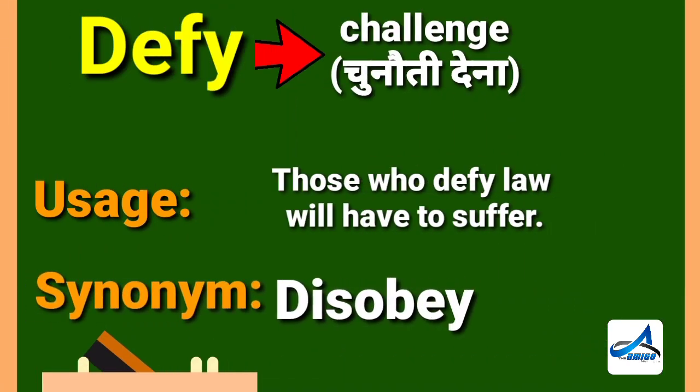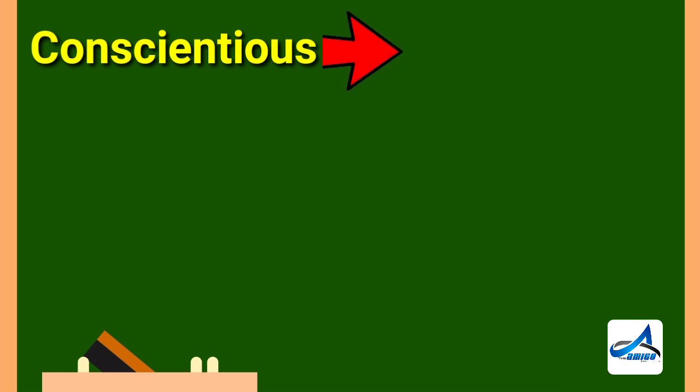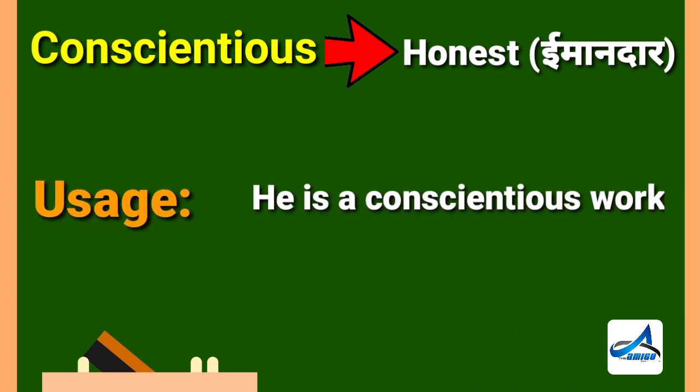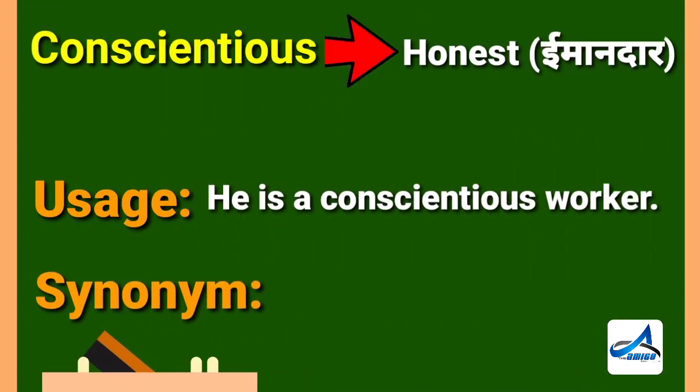Moving to our next word, which is conscientious. Conscientious means honest. In Hindi, you can say imaandar. Now moving to its sentence. Its sentence is, he is a conscientious worker. Its synonym is industrious.